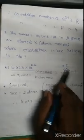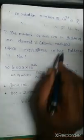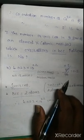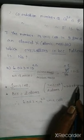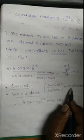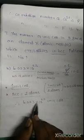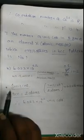In a BCC arrangement, each unit cell contains 2 atoms. Number of unit cells = (1/2) × 0.2 × 6.023 × 10²³ = 6.023 × 10²². So the answer is 6.023 × 10²².